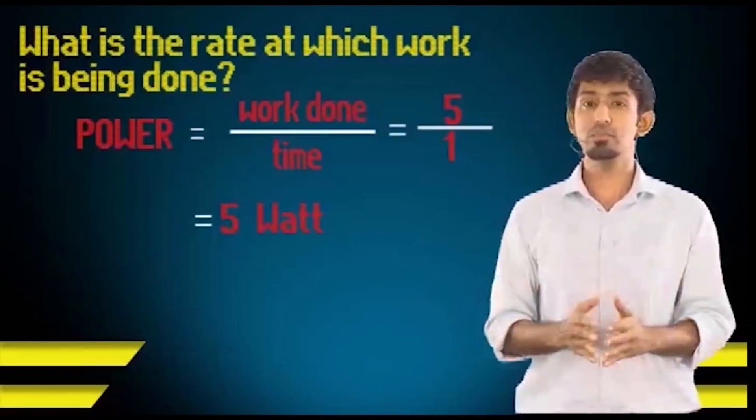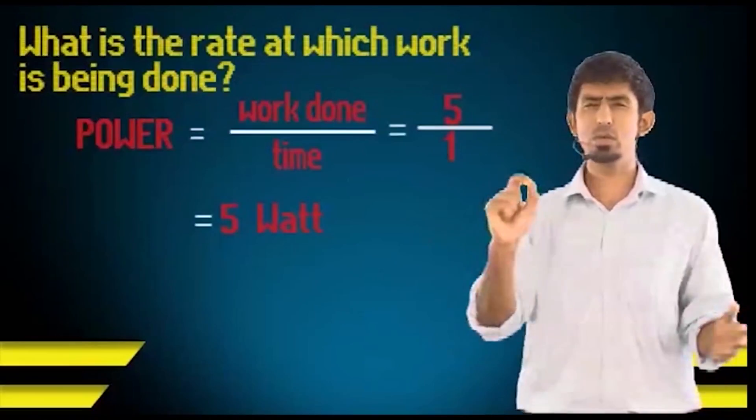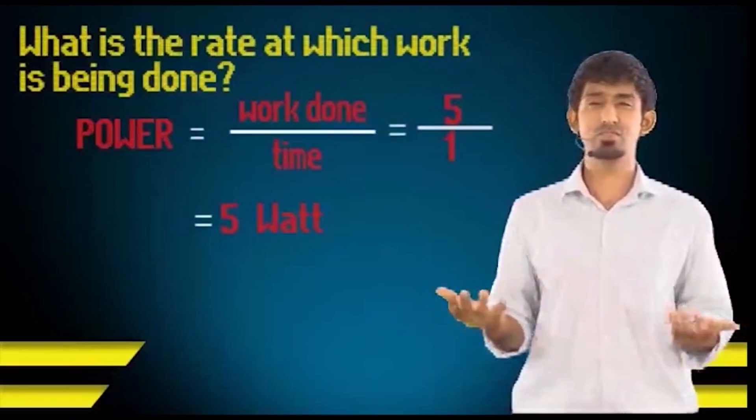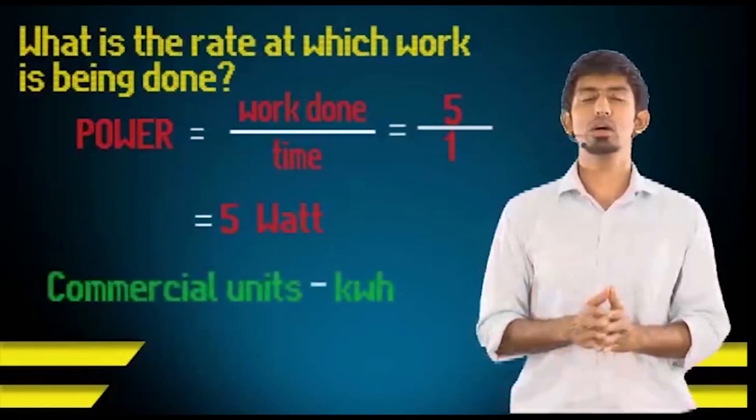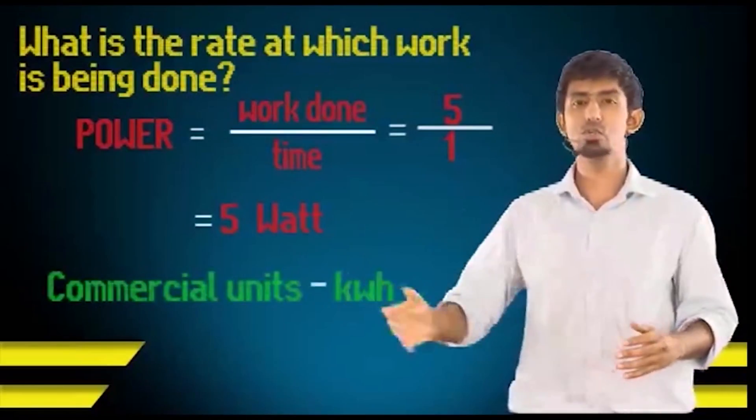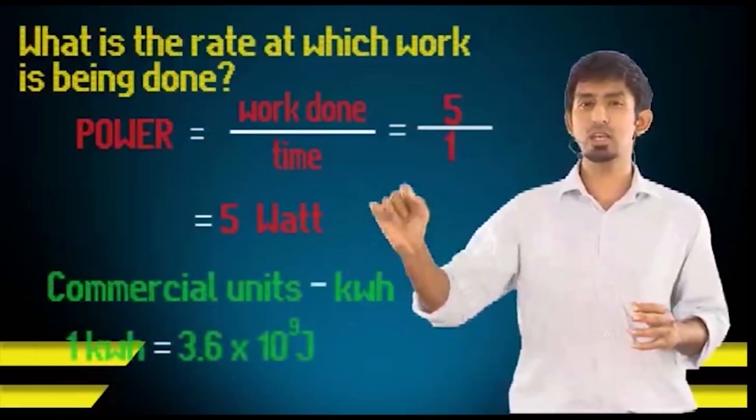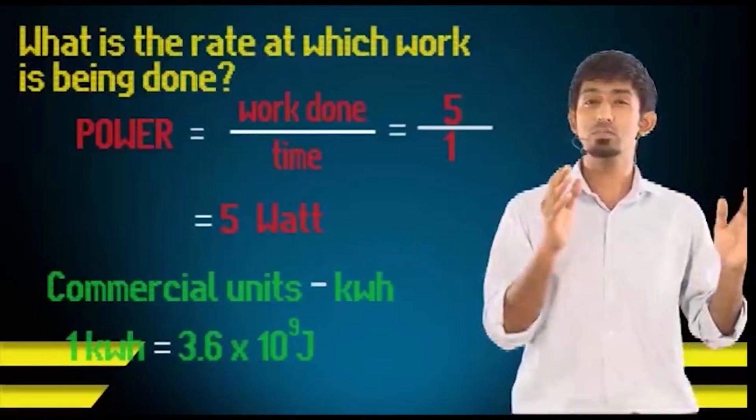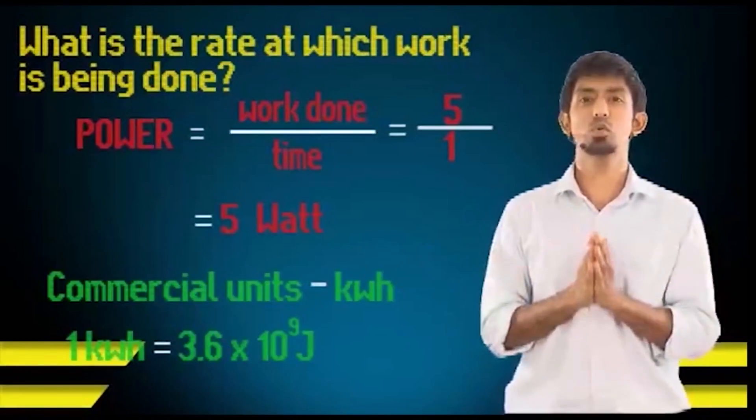And even energy, if you want to take the commercial unit of energy, it's not really joules. Joules happen to be a very small unit. If we measure things in joules, we'll be talking in millions of joules or billions of joules, and that's very inconvenient. So what we do is we define something called kilowatt-hour. Just like kilowatt defines power, kilowatt-hour is a unit to define joules. And one kilowatt-hour is actually 3.6 × 10^9 joules. So the commercial unit is a lot larger than our SI unit of one joule.